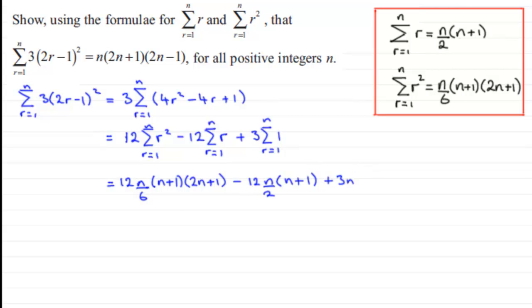Next what I can see is that we can cancel through. 6 into 12 goes 2. 2 into 12 here goes 6 times. Next I want to look to see if there's any common factors. What I notice is that there's an n in each of them. I can see we need an n anyway so that's quite useful. So we'll pull that n out.